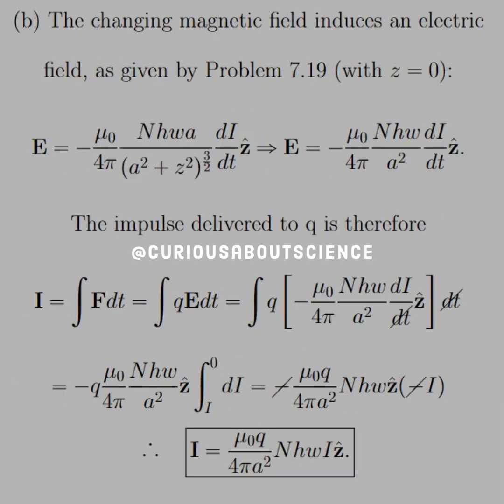Now, for part B, the changing magnetic field induces an electric field as given by problem 7.19 with Z equals zero. I'll go ahead and link that problem so you don't have to go searching for it. Pretty easy to deal with. So, with Z equals zero, just plug it in. You see that you get A squared to the 3 halves power from that. So, you get A cubed, actually. And then the A up top in the numerator divides that down. So, you're left with A squared.